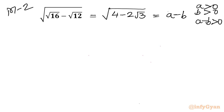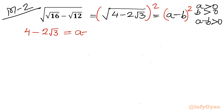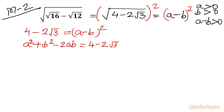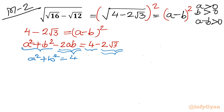For method 2, we take squaring of both sides. Left hand side becomes 4 minus 2 root 3, and right hand side becomes (a − b)². Expanding using the formula a² + b² − 2ab = 4 − 2√3. Now I will compare: a² + b² = 4, and from −2ab = −2√3, we can write ab = root 3.